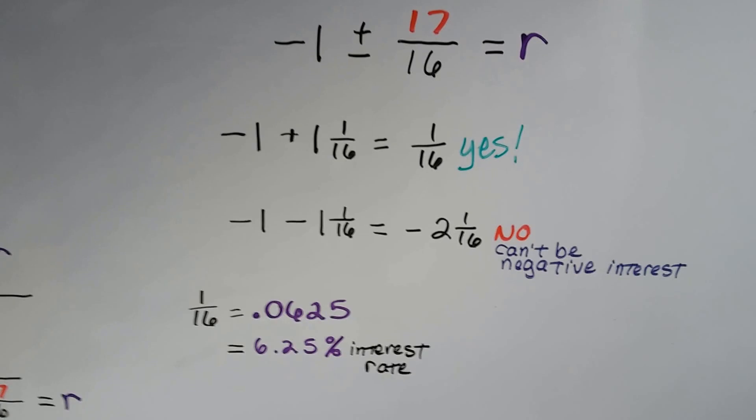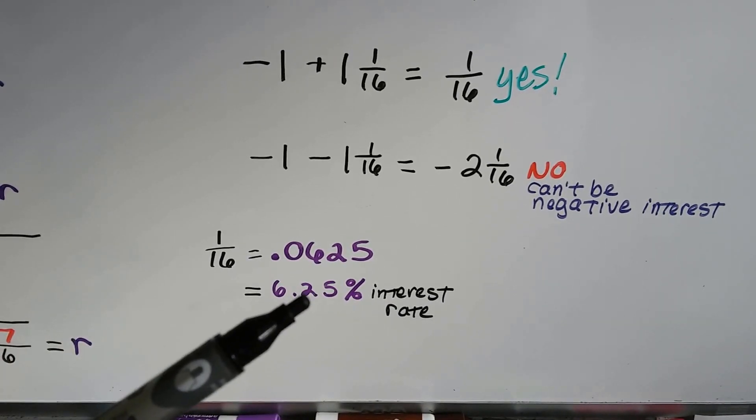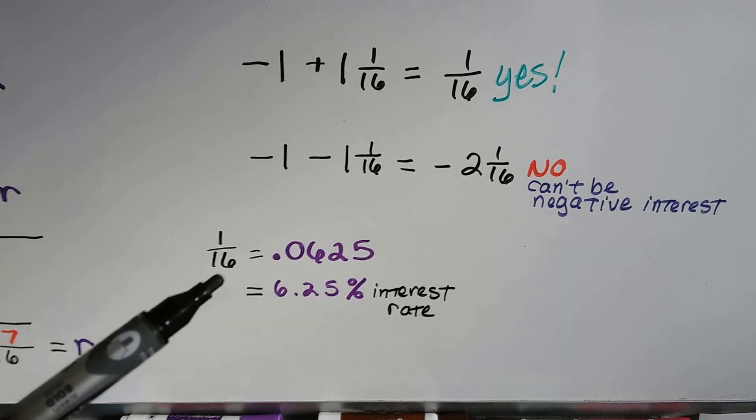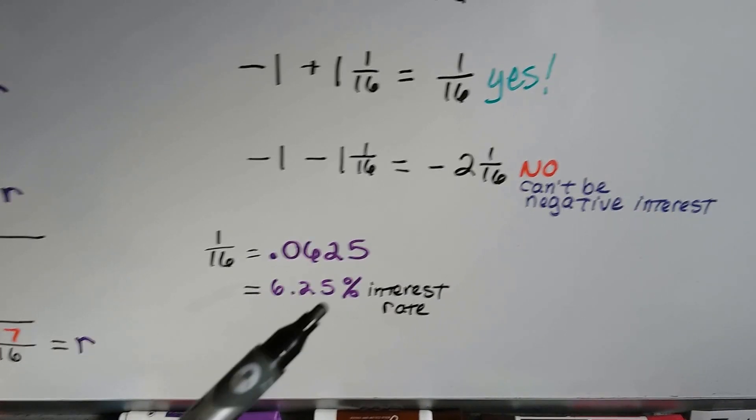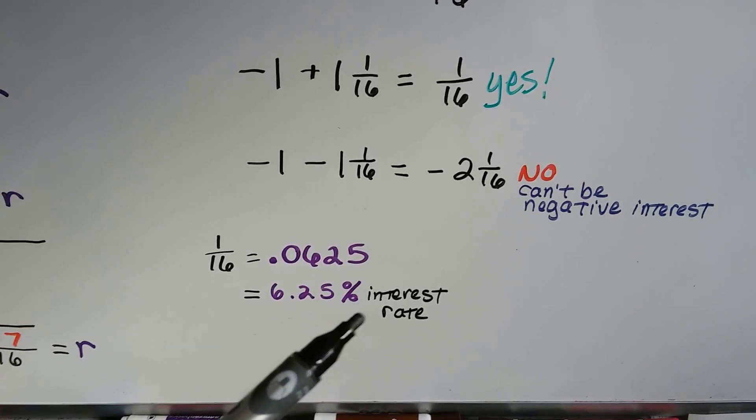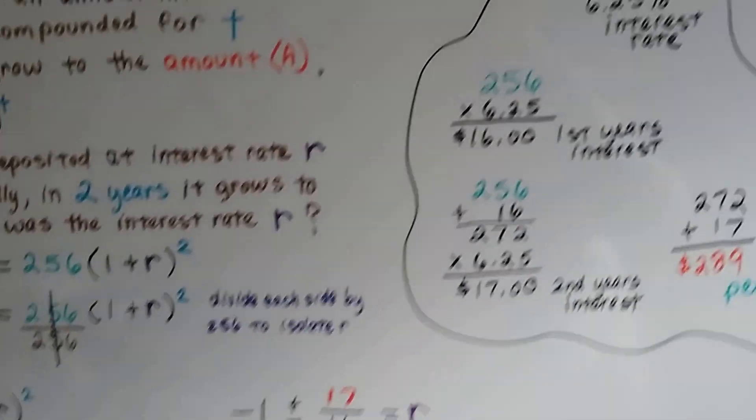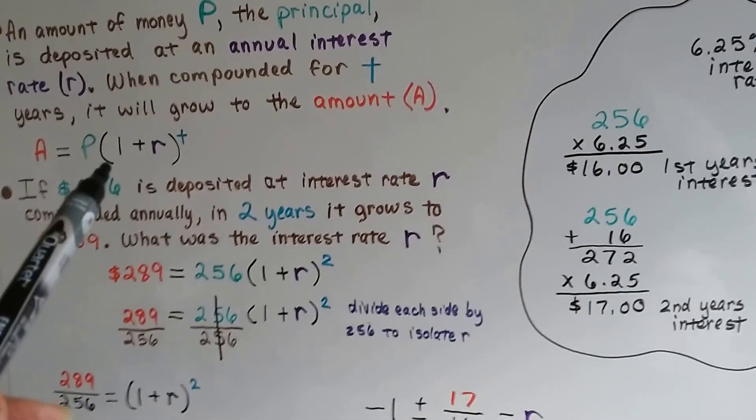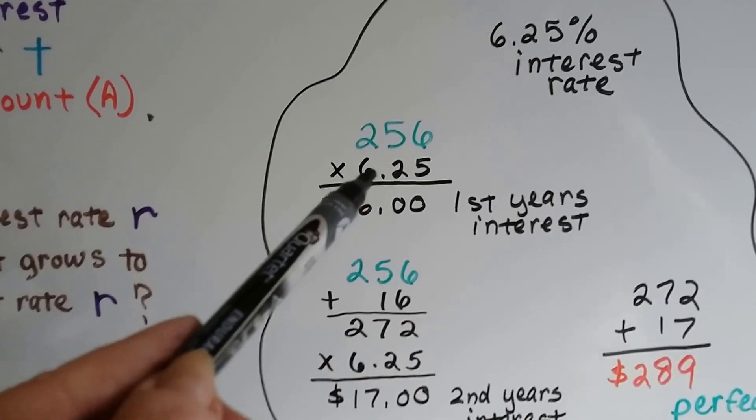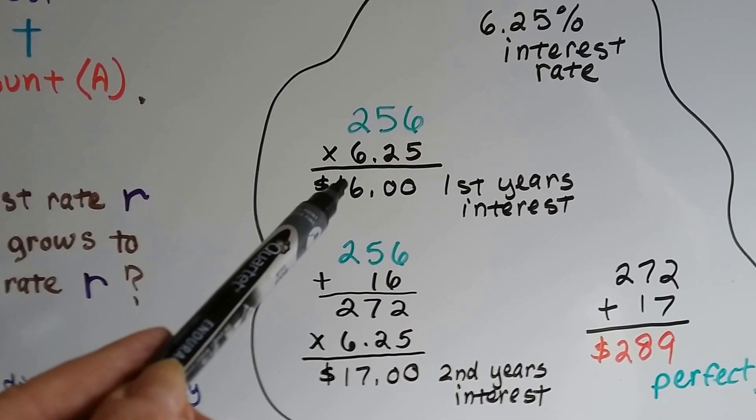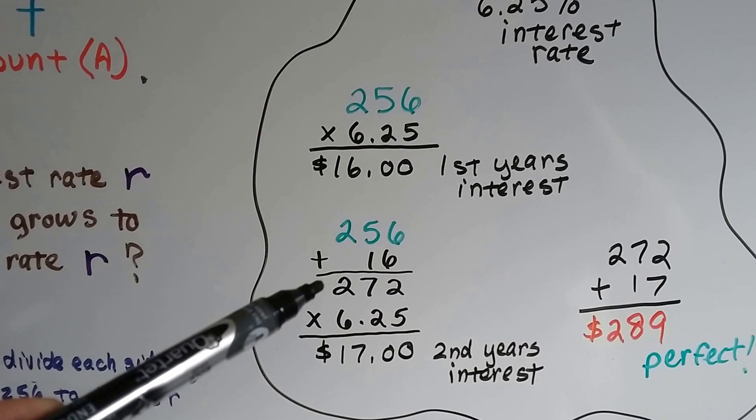It's got to be this one. You remember back in fifth and sixth grade, we changed fractions to decimals to percentages. So 1 sixteenth is .0625 or 6.25% as an interest rate. So now we know what our interest rate is, and to check this out, we had an initial value of 256. If we multiply it by 6.25% interest rate, that's $16 for the first year's interest.